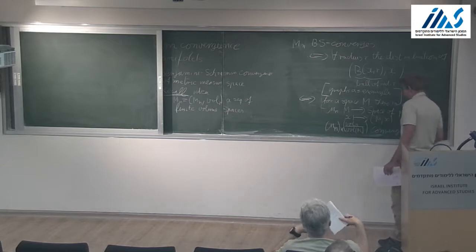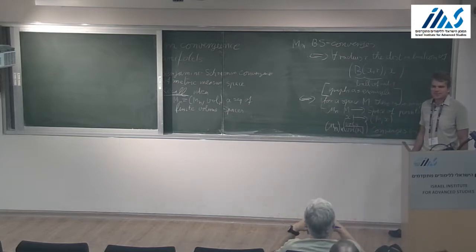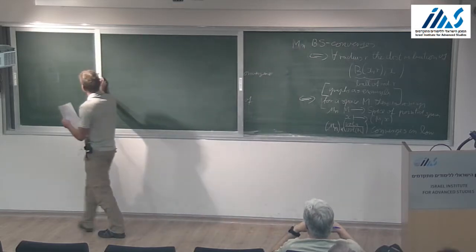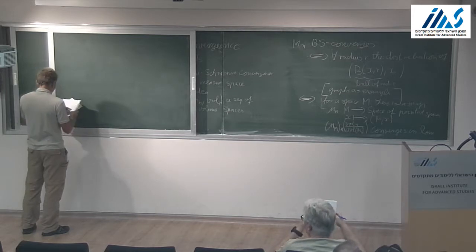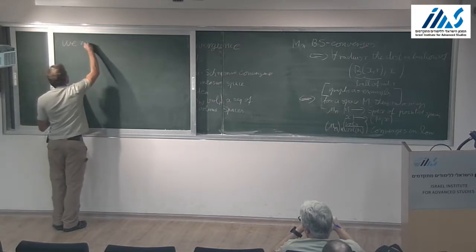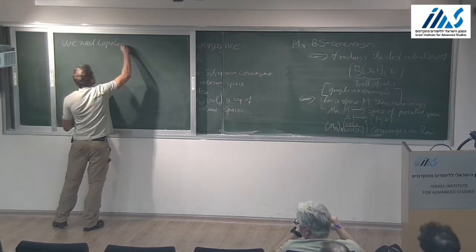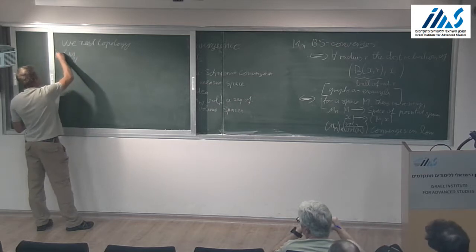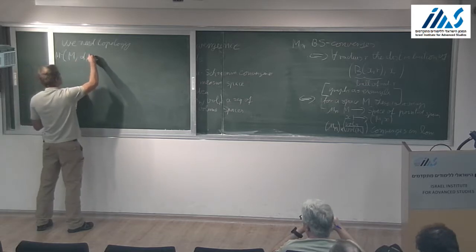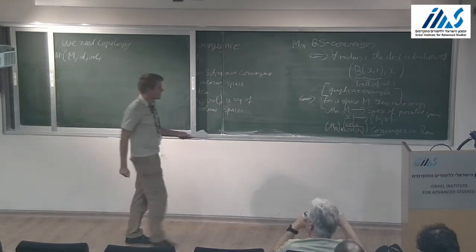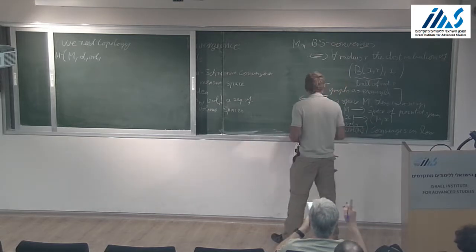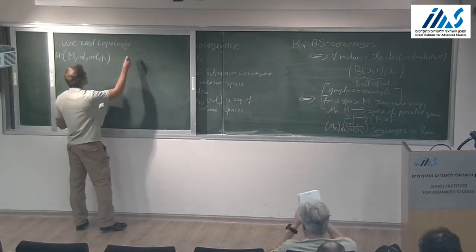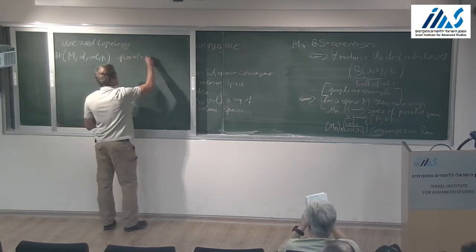What's the topology there? That's exactly the point and I want to explain it now in the case of metric measure spaces. We need a topology. The things I want to look at are metric measure spaces — spaces that consist of a set M, a metric, and a volume. As I said, these are pointed spaces. So what we need is a topology on the space of pointed spaces — pointed metric measure spaces, also abbreviated MM.